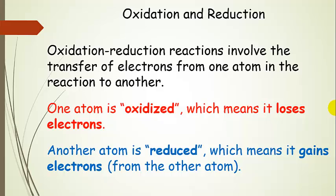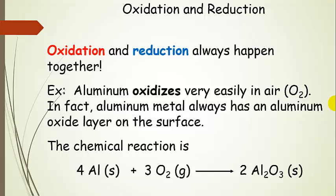By a series of accounting rules, we can figure out that one atom is oxidized, which means that it loses electrons. Another atom in the reaction is reduced, which means it gains electrons from the other atom. Now these processes always happen together.